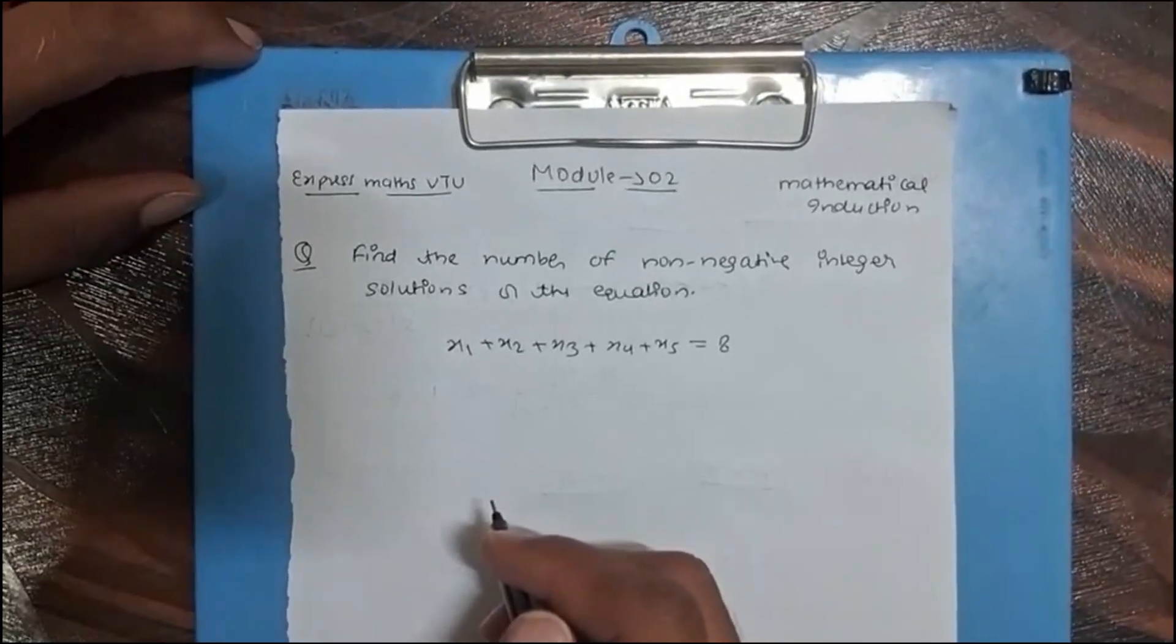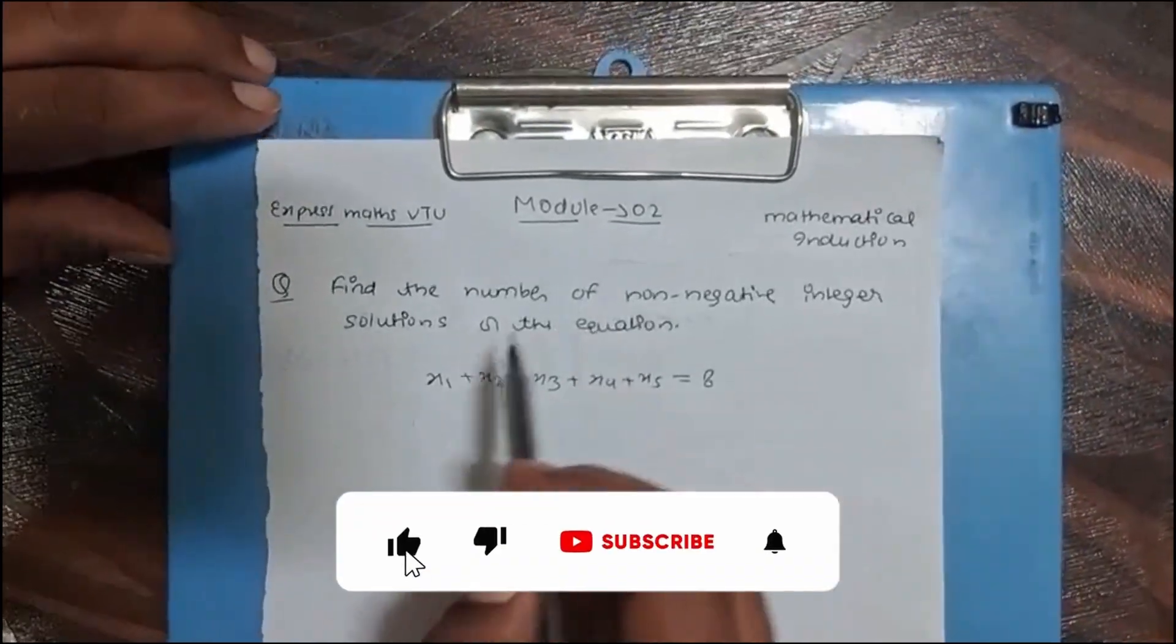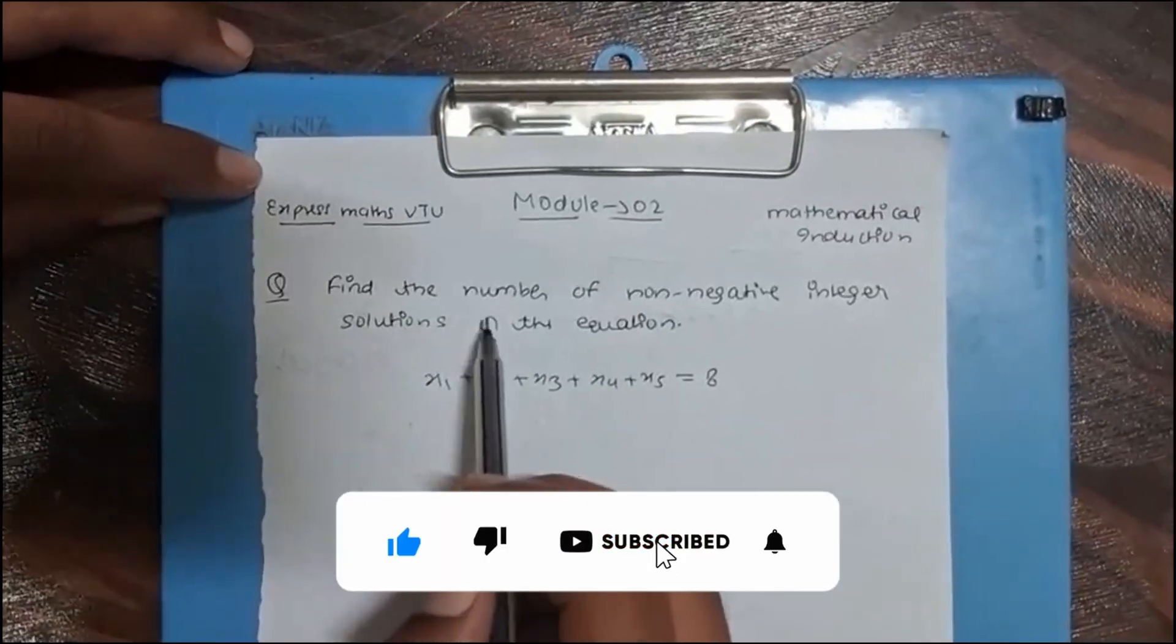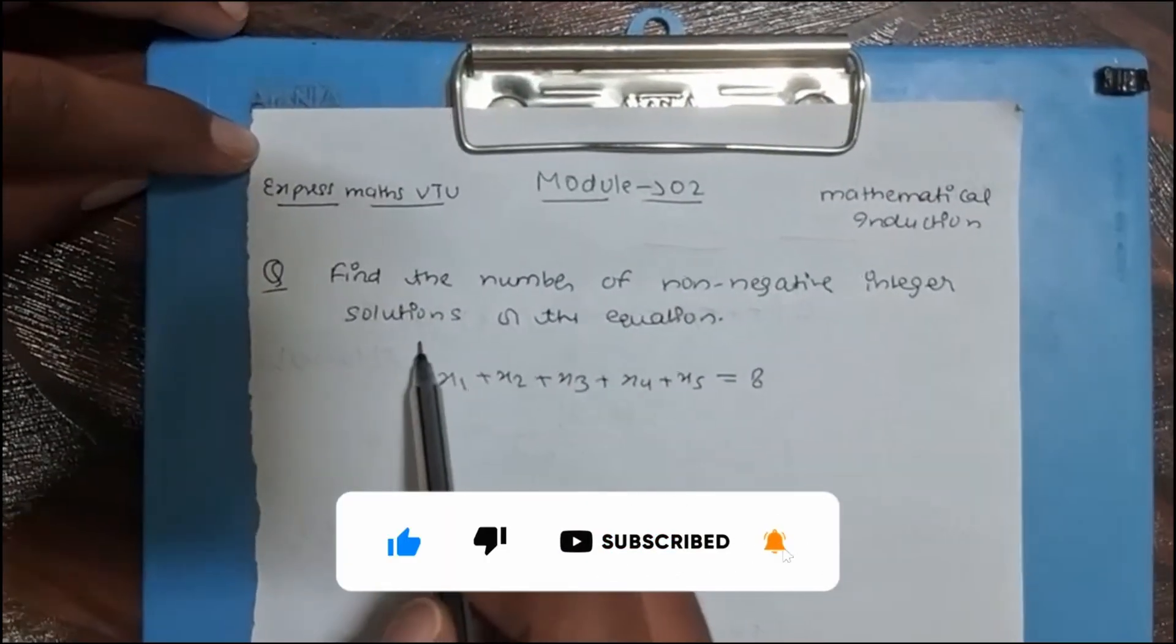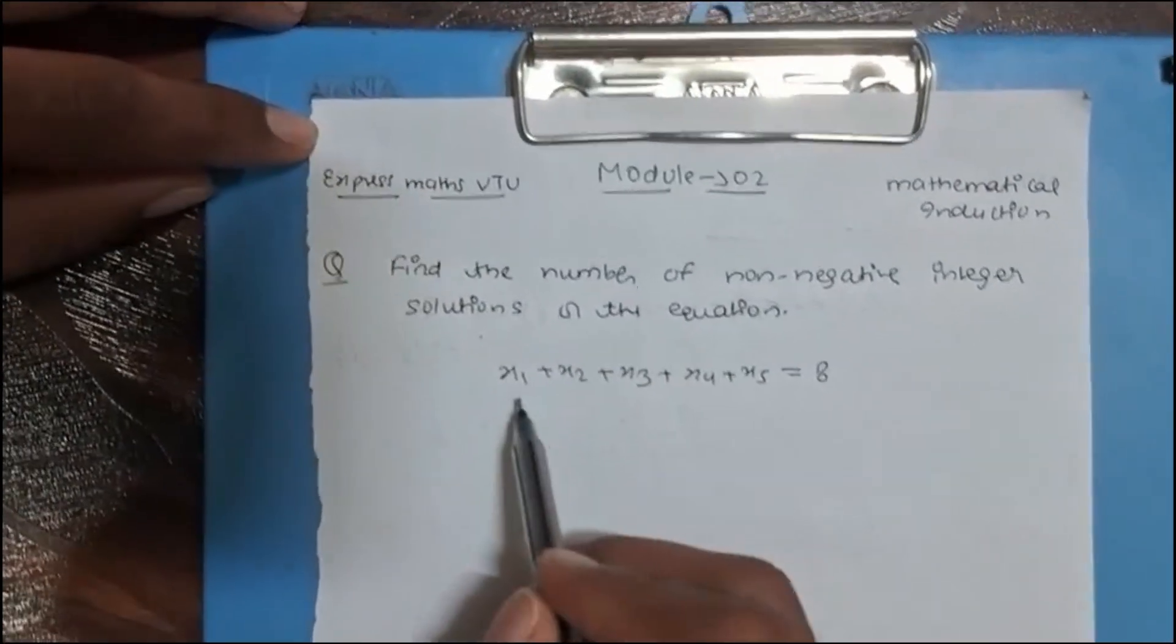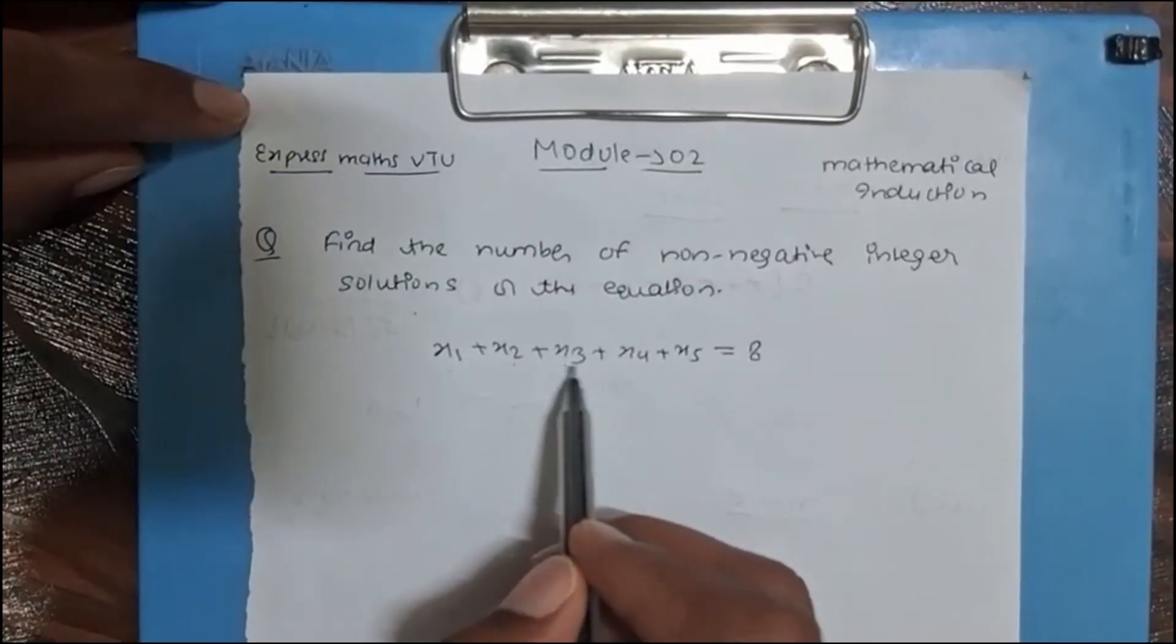Hello everyone, today we are going to solve another problem from Module 2. The question is: find the number of non-negative integer solutions of the equation x1 + x2 + x3 + x4 + x5 = 8.